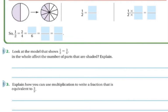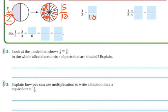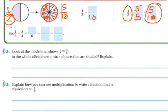Again I have my 1/2, but this time I broke it into 10 parts, so my bottom number is 10. I can count the shaded: 1, 2, 3, 4, 5 — so 5/10. What number do I multiply 2 by to get 10? 2 times 5 is 10. So if I multiply the bottom by 5 and the top by 5, I get 5/10. 1 times 5 is 5. So 5/10 and 1/2 are equivalent fractions.